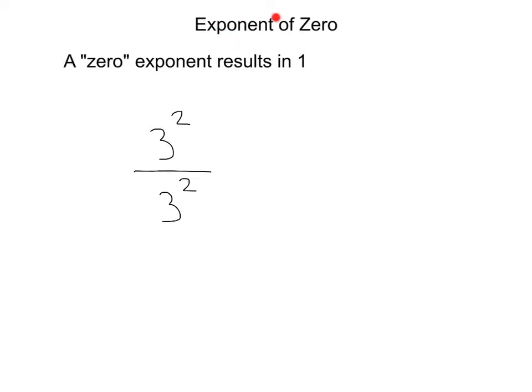Whenever you have an exponent of 0, it results in 1. Here we have 3 squared divided by 3 squared. Well, we might say 3 squared divided by 3 squared - obviously that's 1, right? Because anything divided by itself is 1.